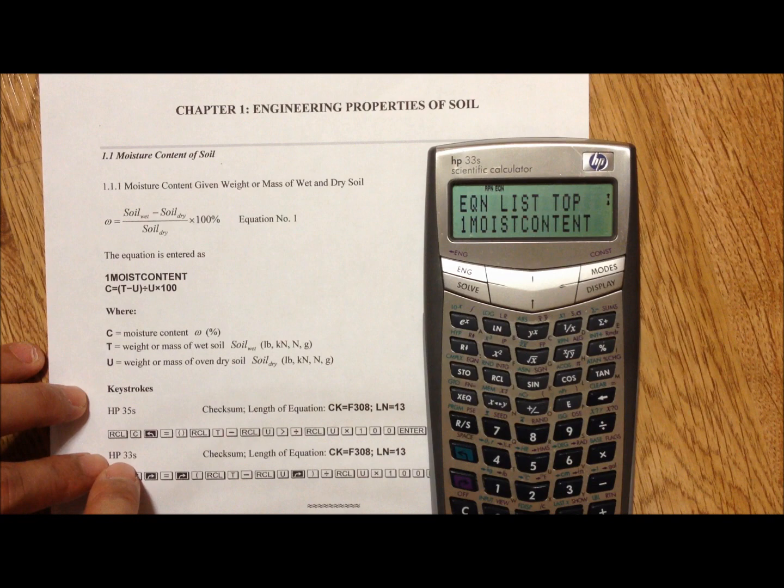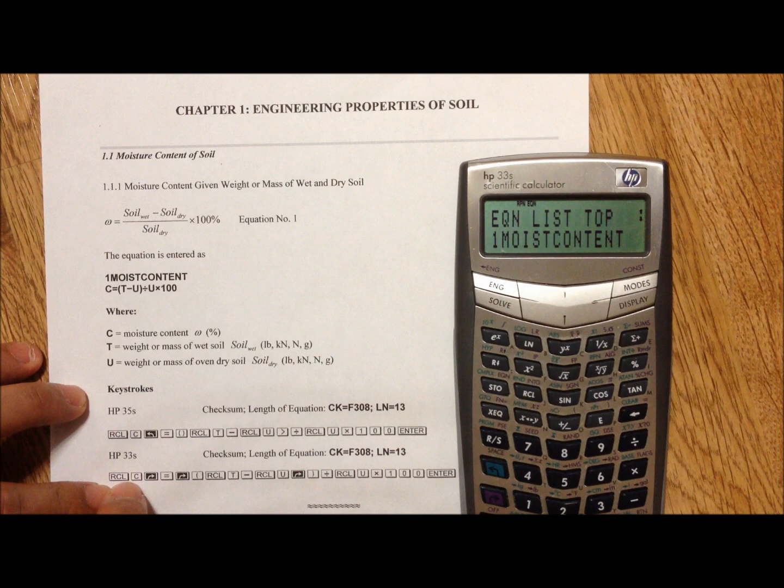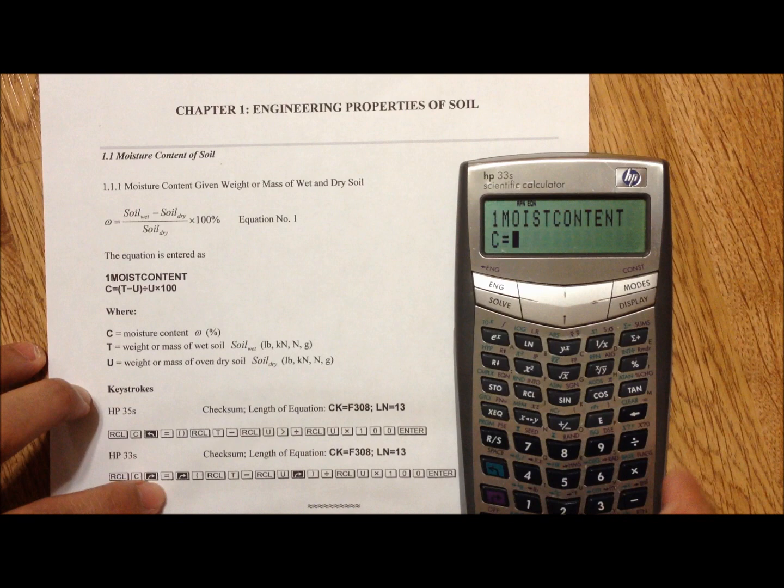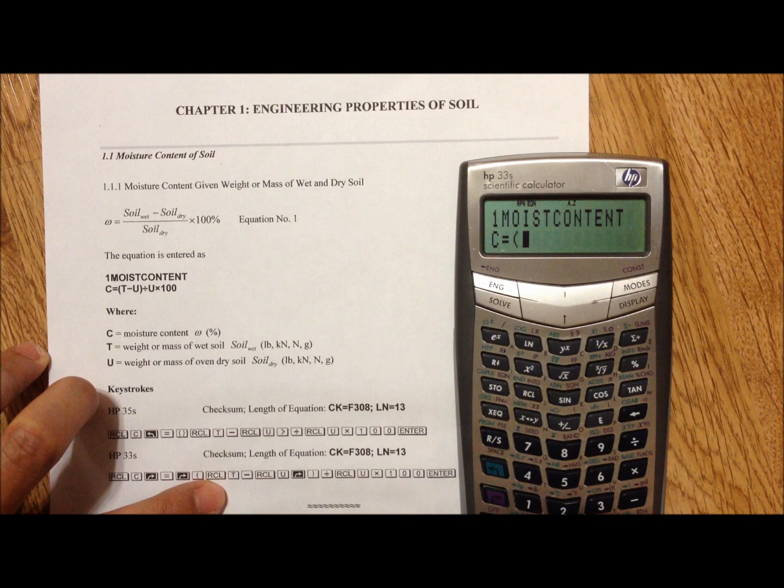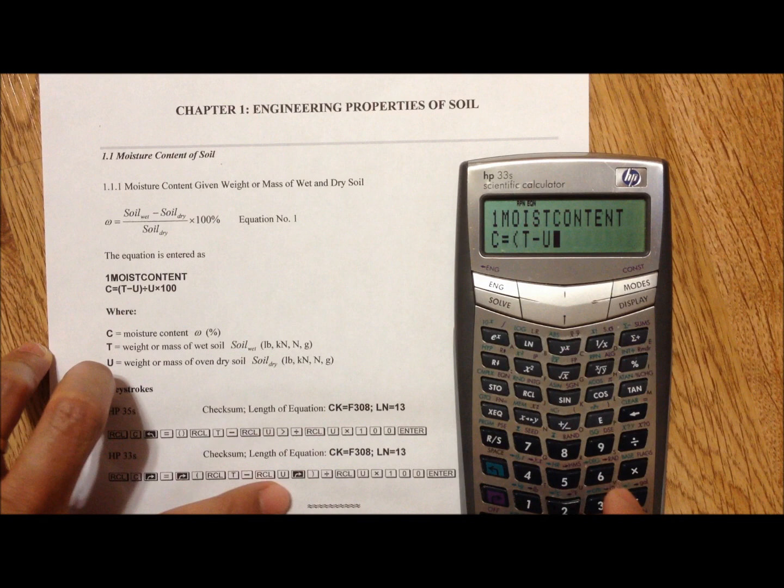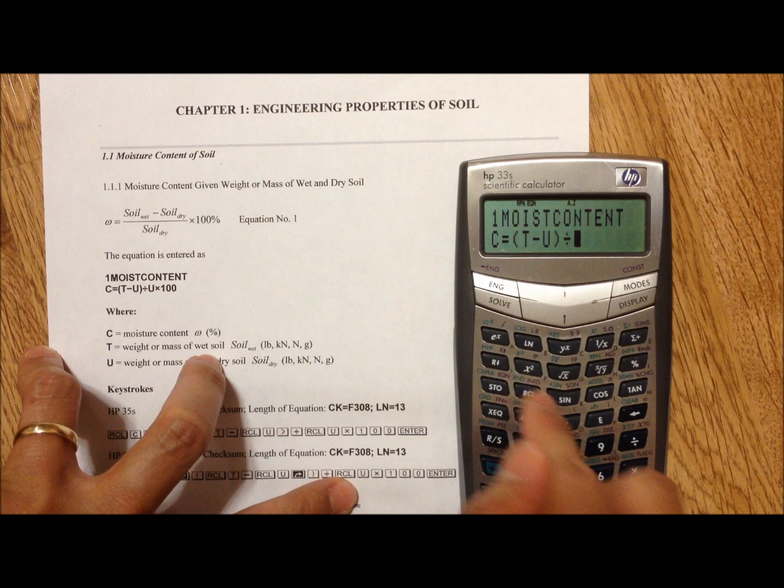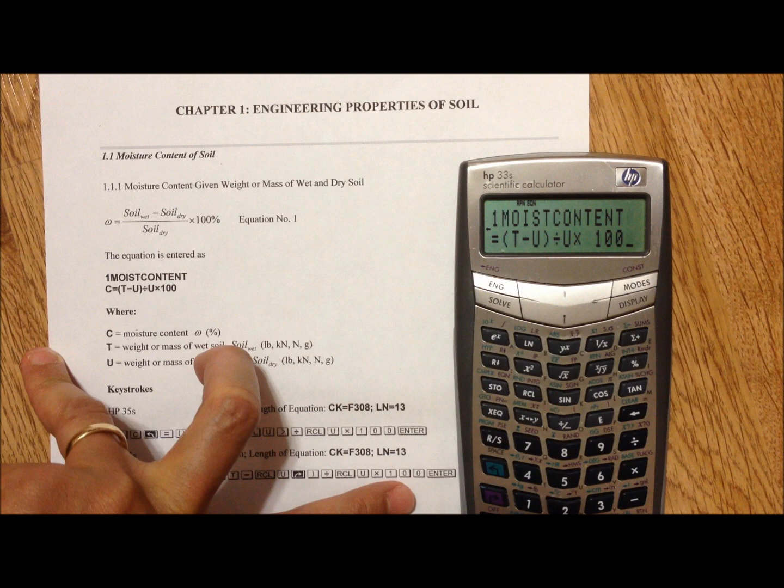For the equation, we have the keystrokes here for HP-33S at the bottom, from left to right: Recall C, purple arrow, equals, purple arrow, open parenthesis, Recall T, minus, Recall U, purple arrow, close parenthesis, divide, Recall U, times 100, and enter.